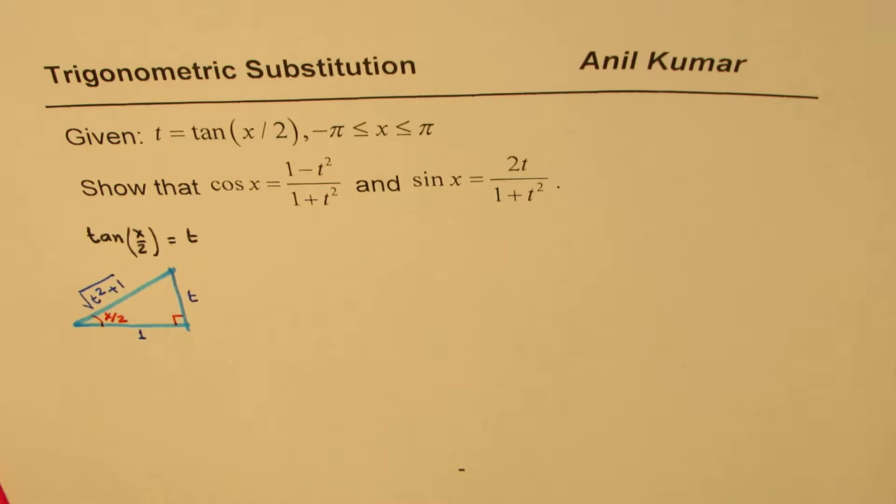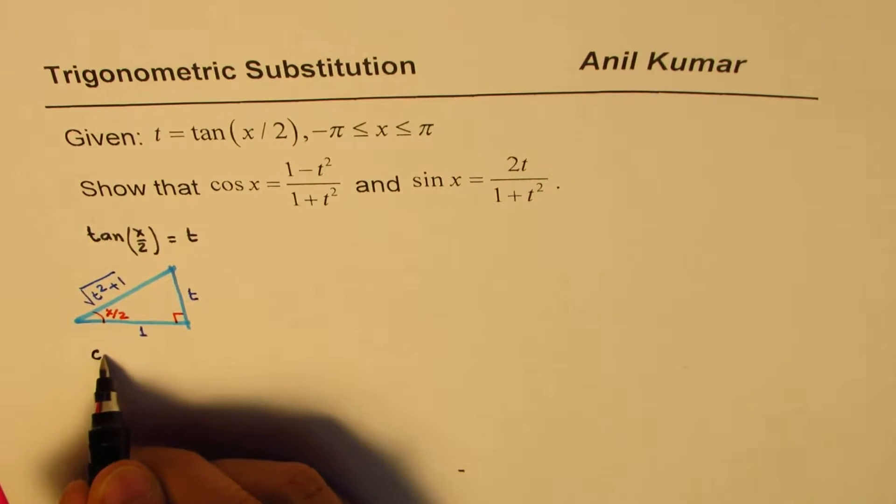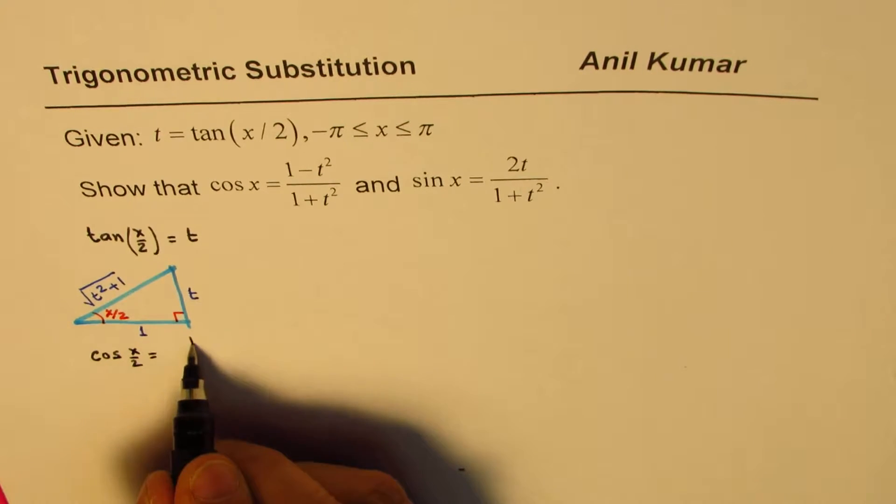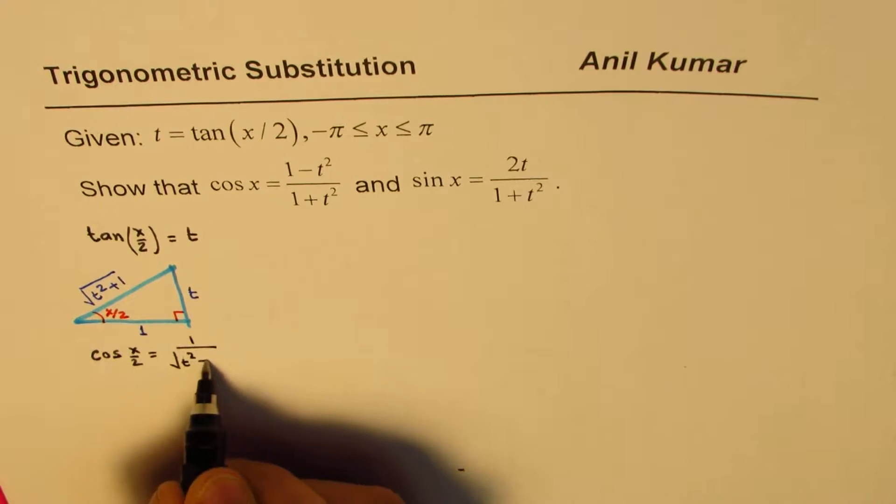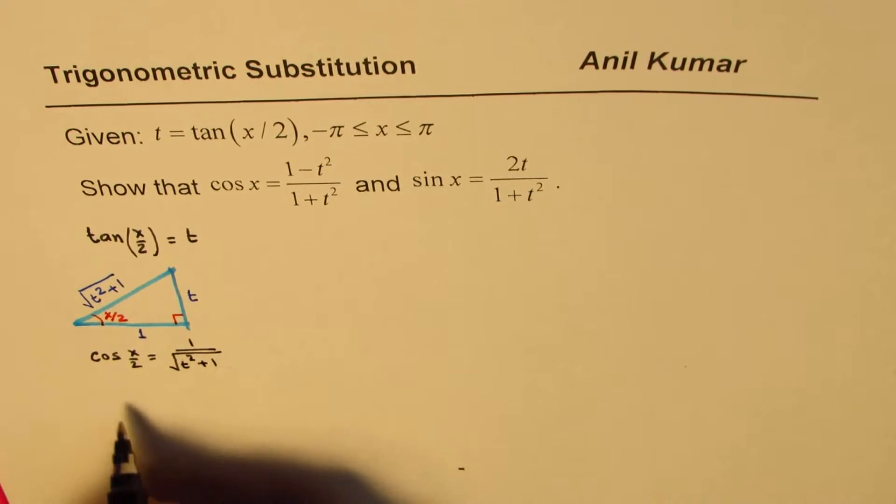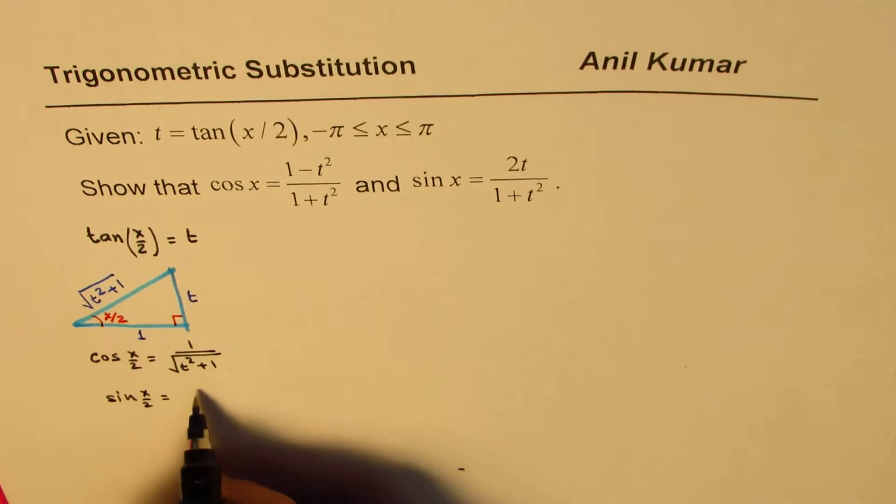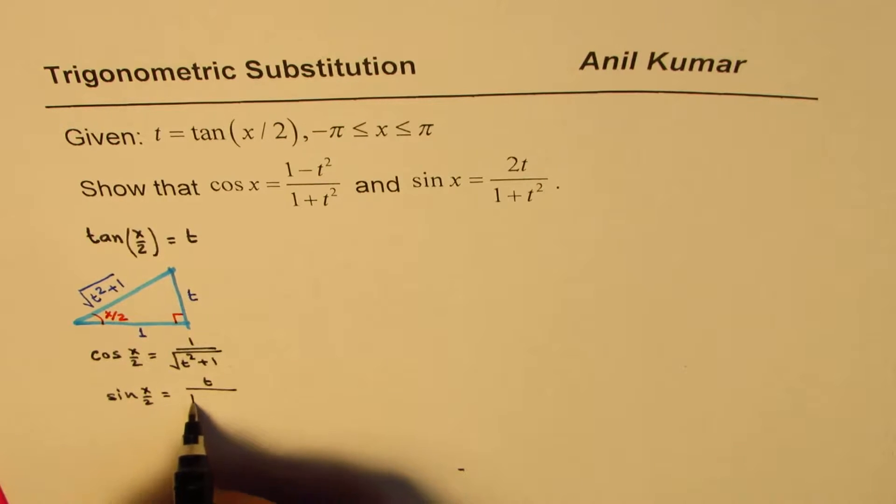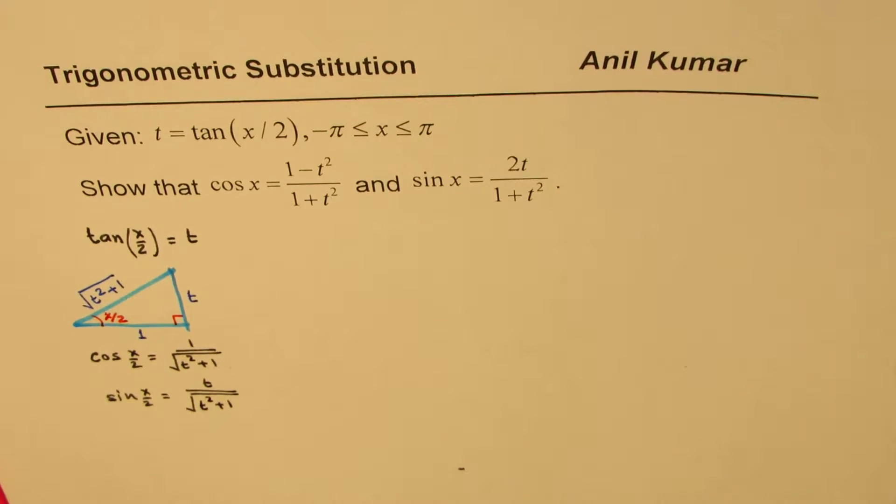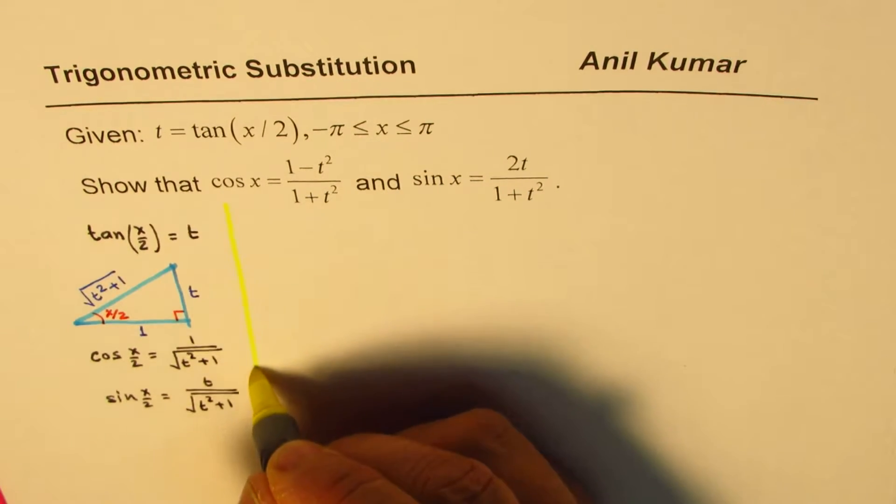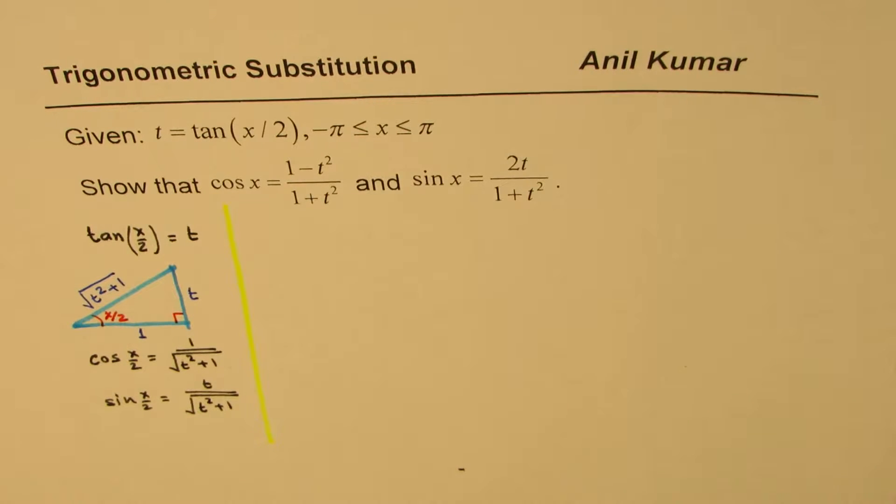Now once we know that, we can write what is cos(x/2). So we say cos(x/2) equals adjacent side over hypotenuse, 1 over square root of t² plus 1. And we can say sin(x/2) equals opposite over that, so it is t over square root of t² plus 1. So we directly get the value of cos and sin(x/2) from this substitution.